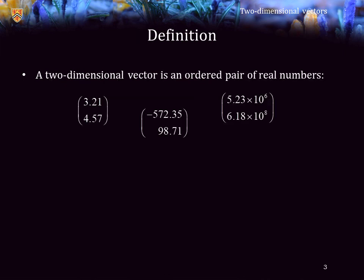A two-dimensional vector is nothing more than an ordered pair of real numbers. Here are three examples of two-dimensional vectors. Each entry is a real number, be it positive or negative, small or large.